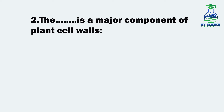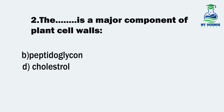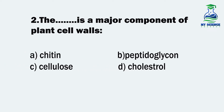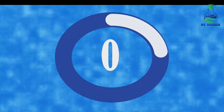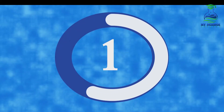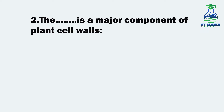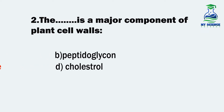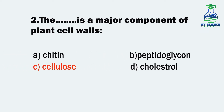Question 2. The blank is a major component of plant cell walls: A. Chitin, B. Peptidoglycan, C. Cellulose, and D. Cholesterol. And the correct option is C. Cellulose.